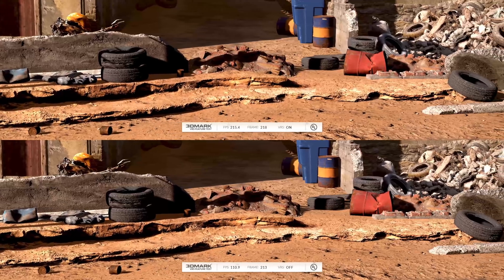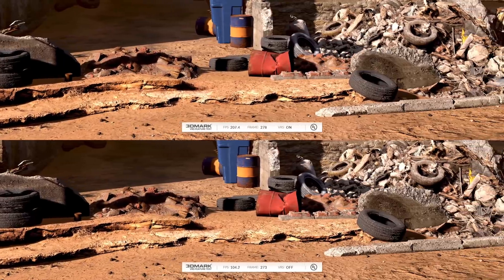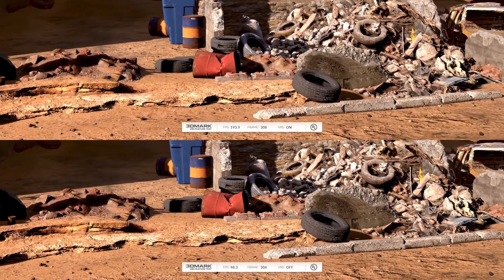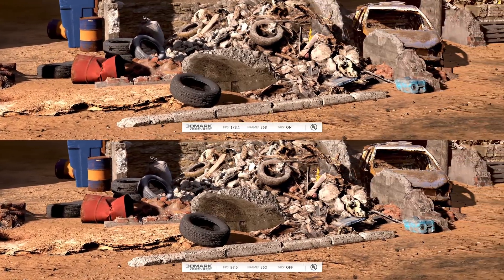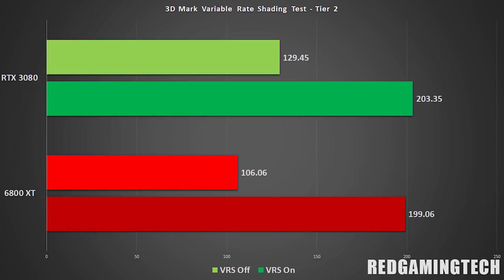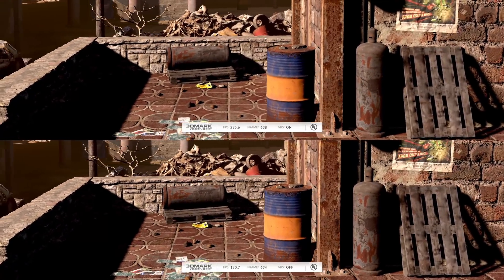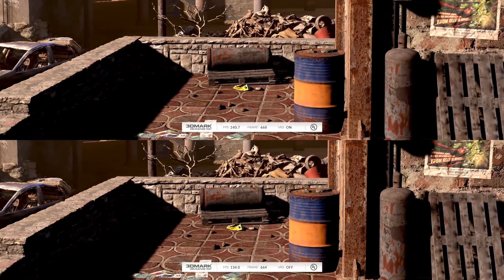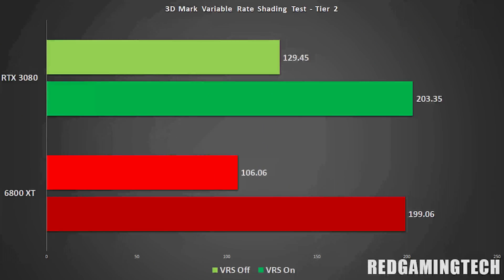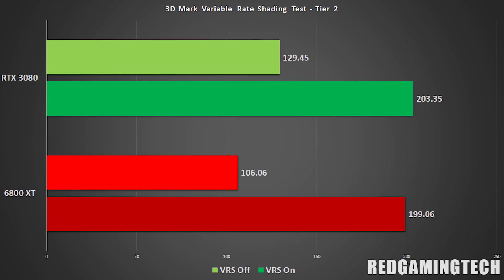Let's start with synthetic tests using 3DMark's variable rate shading benchmark. This benchmark is specifically designed to test VRS, and the results could be described as a best-case scenario — definitely an unrealistic portrayal of how VRS will affect titles in the real world, but the performance results are still rather interesting.